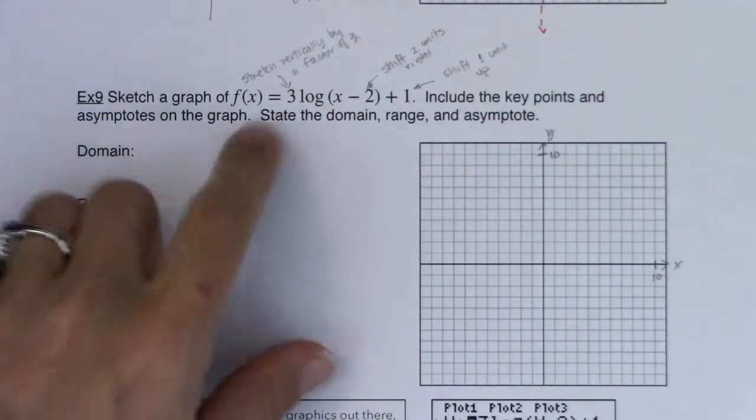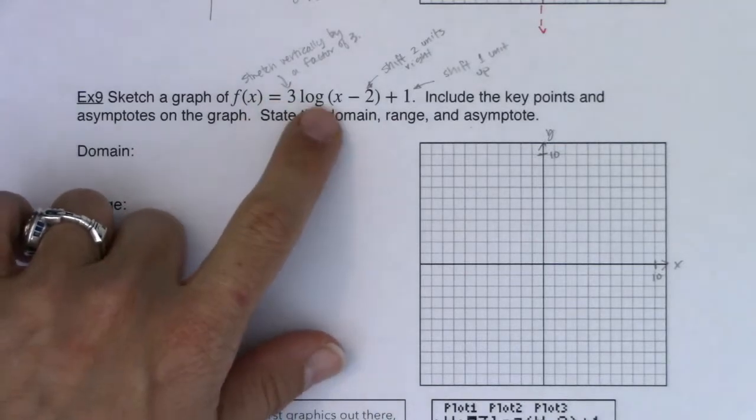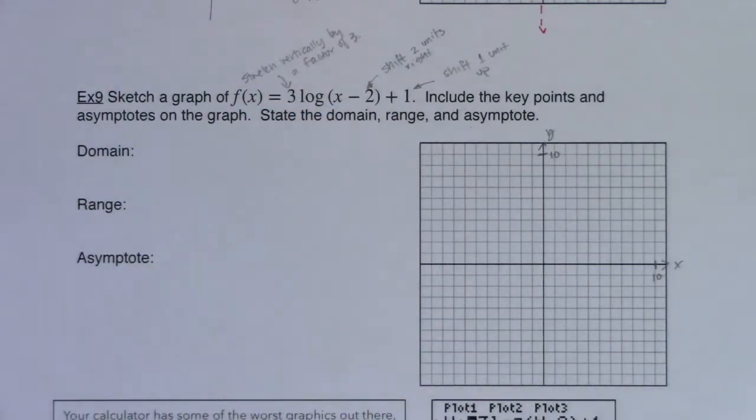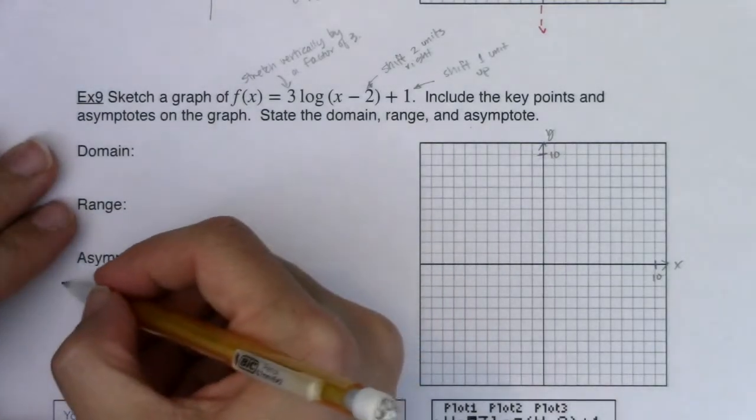I've got no negative out here and no negative in front of the x, so I'm not reflecting over either of the axes, which is great. So with that, let's get going.